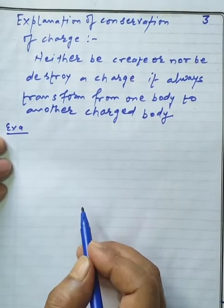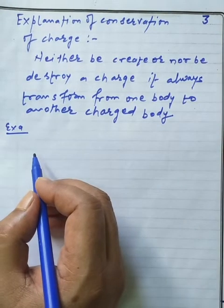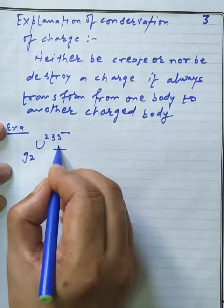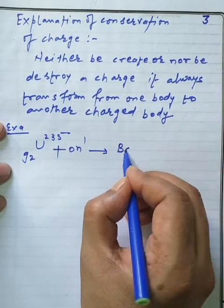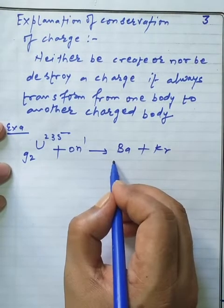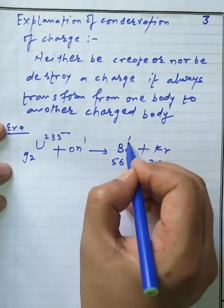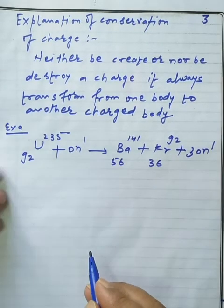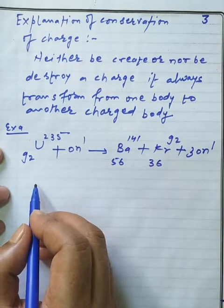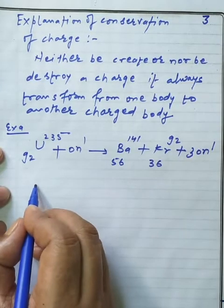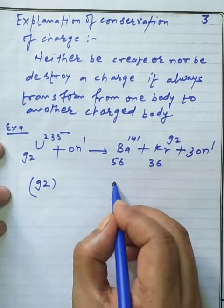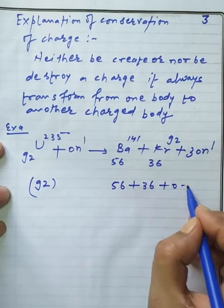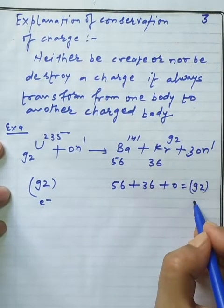As an example, I am taking a nuclear reaction: in a nuclear reaction, before and after the reaction, the total charge remains conserved. Taking uranium-92, mass number 235, with neutron bombardment, it produces two daughter nuclei — barium (atomic number 56, mass 141) and krypton (atomic number 36, mass 92) — plus 3 neutrons. Before the reaction the total number of electrons is 92; after the reaction, 56 plus 36 equals 92. Electrons remain conserved.